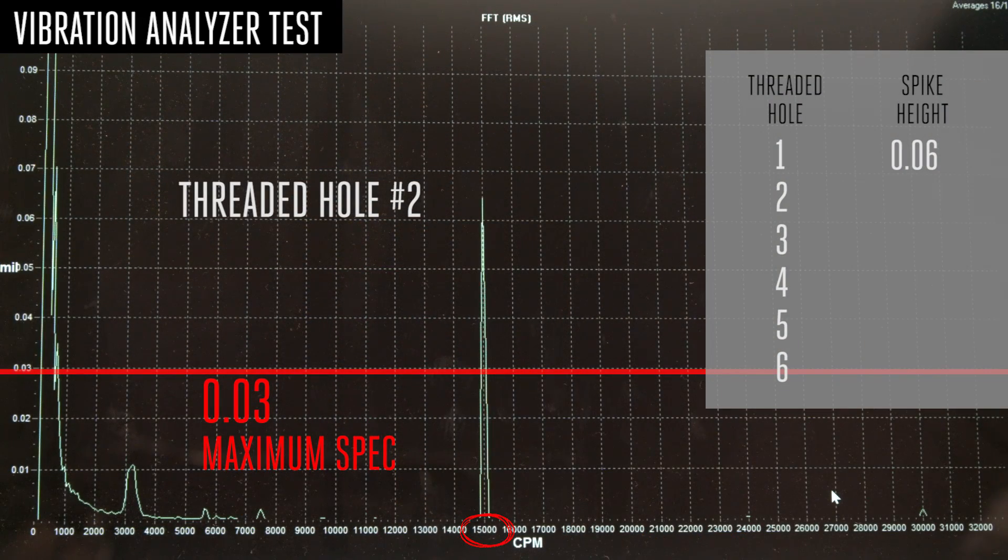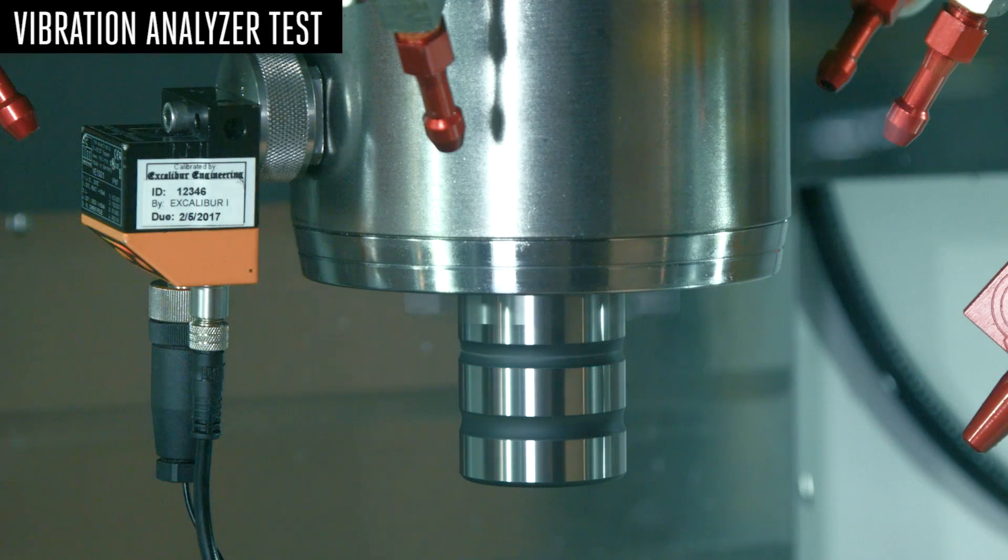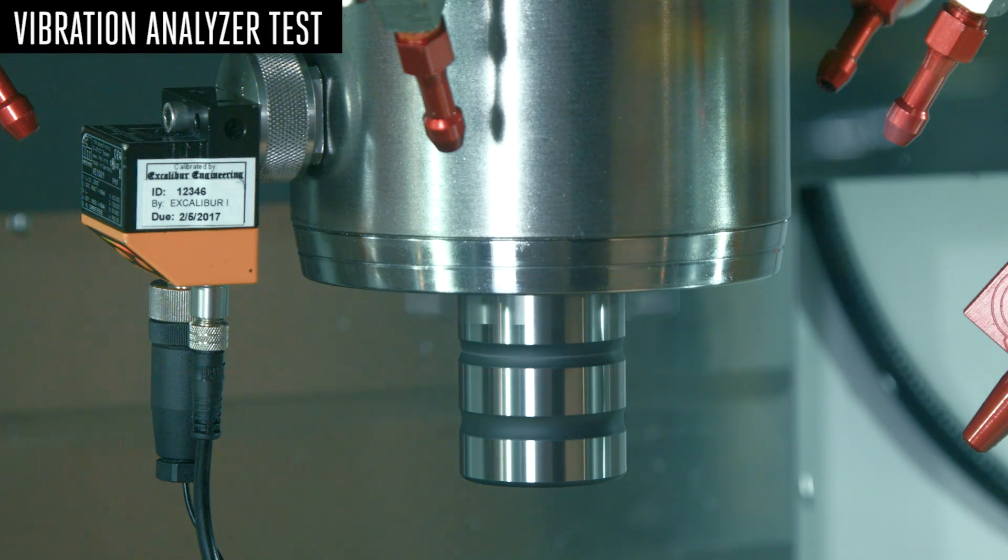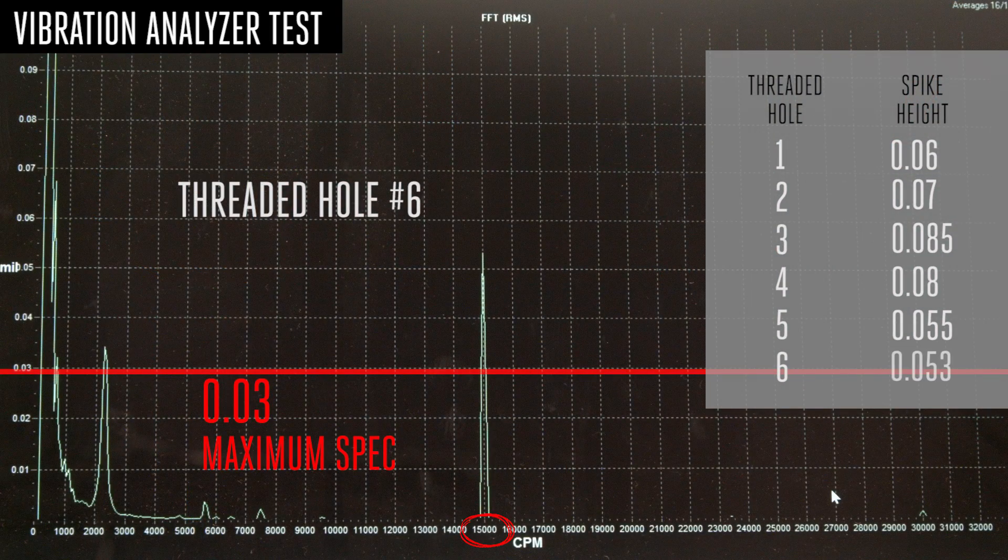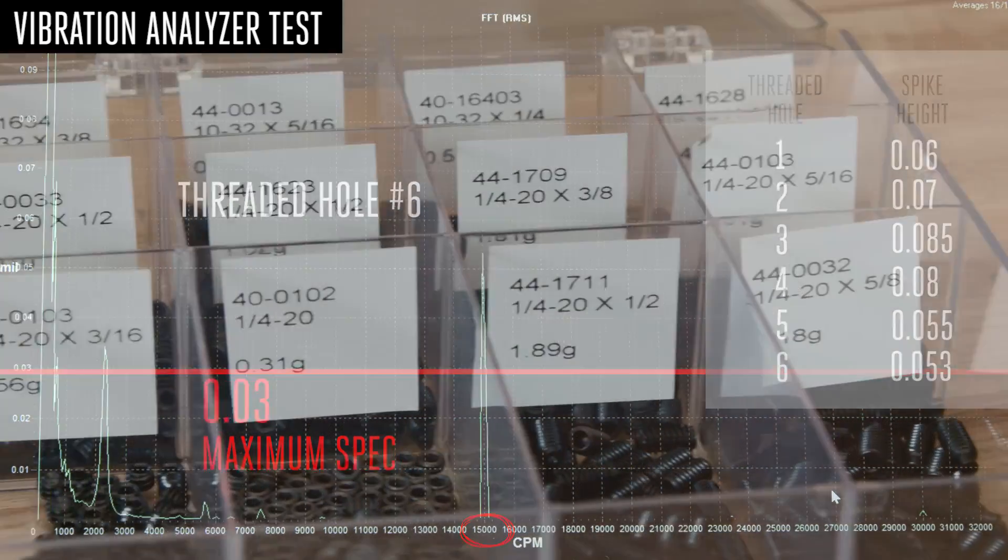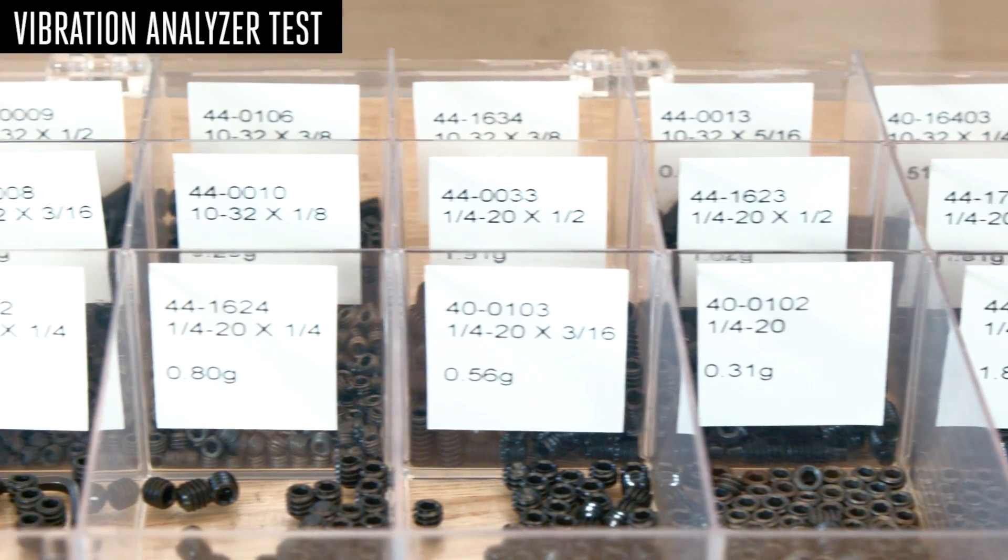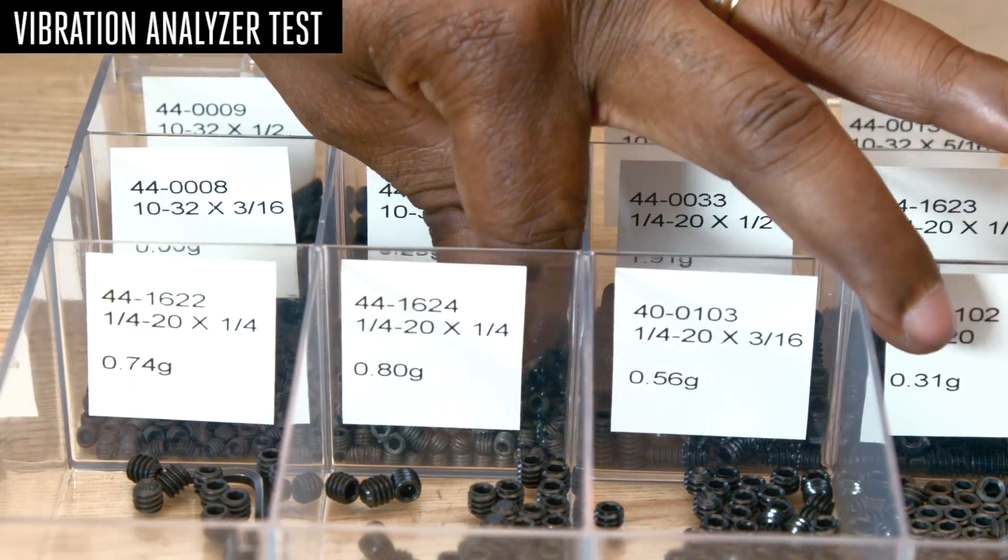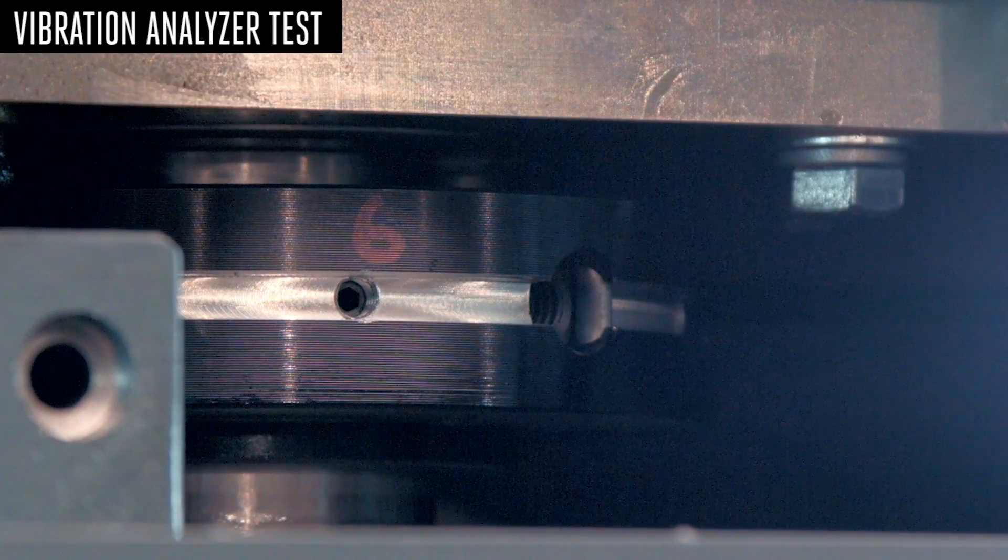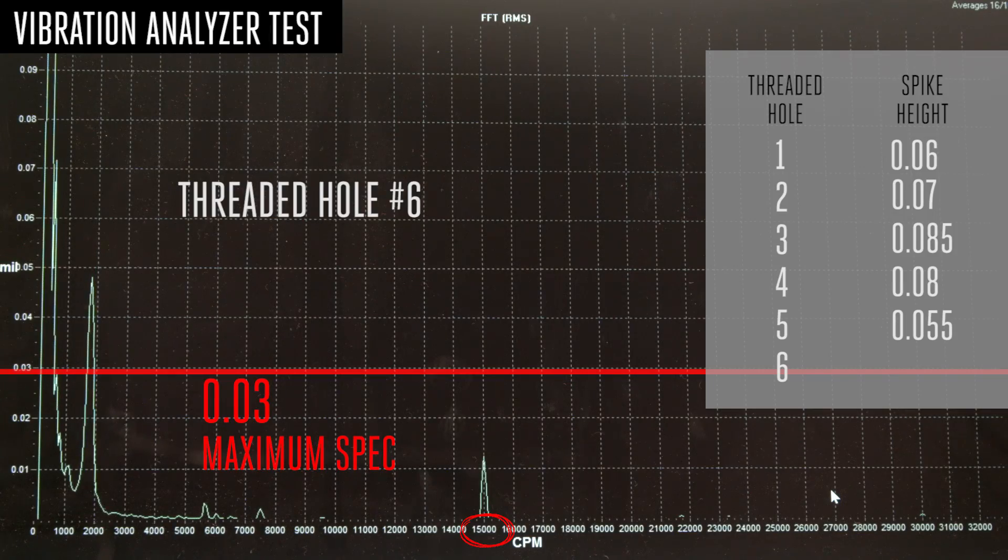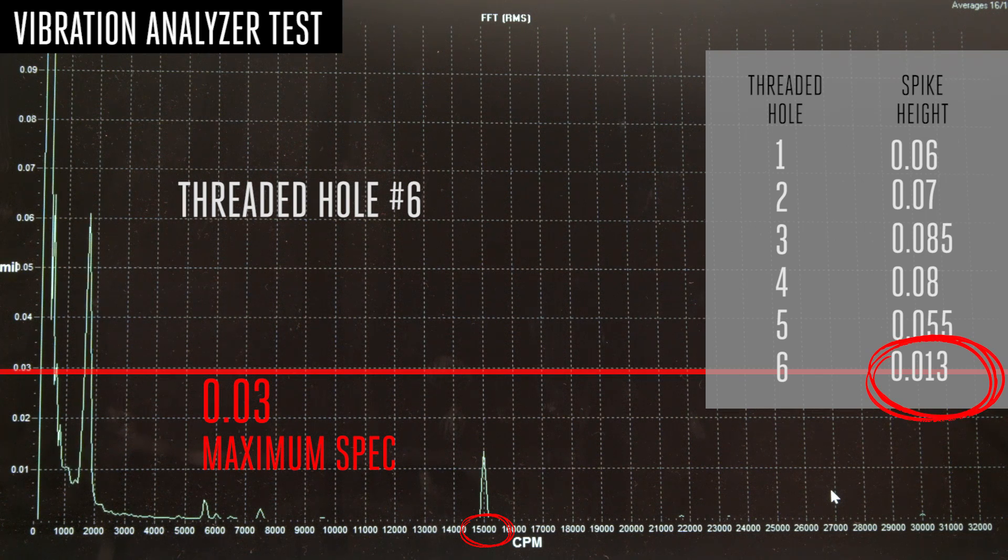As we move through the initial check, one of these six locations will have the lowest spike. This is the spot that needs the balancing weight. With the set screws available in your kit and with the depth of the threaded hole available, add more or less weight at this one hole until you've achieved the smallest displacement spike at the max spindle speed.